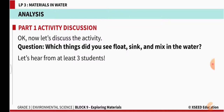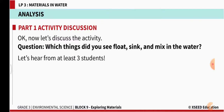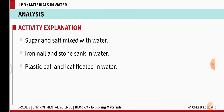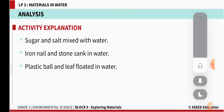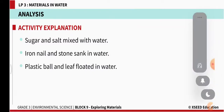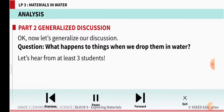Now it's time for some questions. Which things did you see float, sink, and mix in water? We saw the leaf and the ball floating, the iron nail sinking, and the sugar and salt got mixed in water. To summarize: sugar and salt mixed with water; iron nail and stone sank; plastic ball and leaf floated.